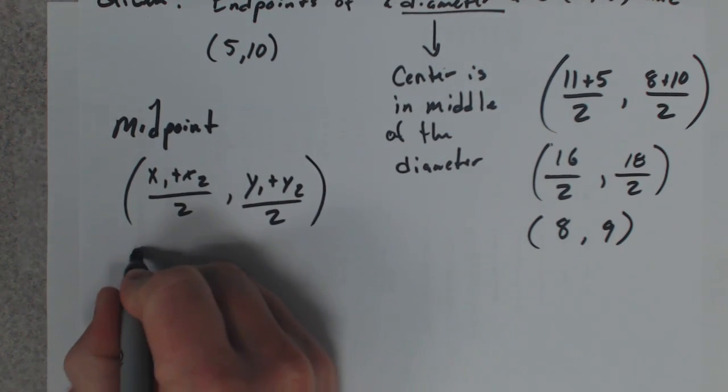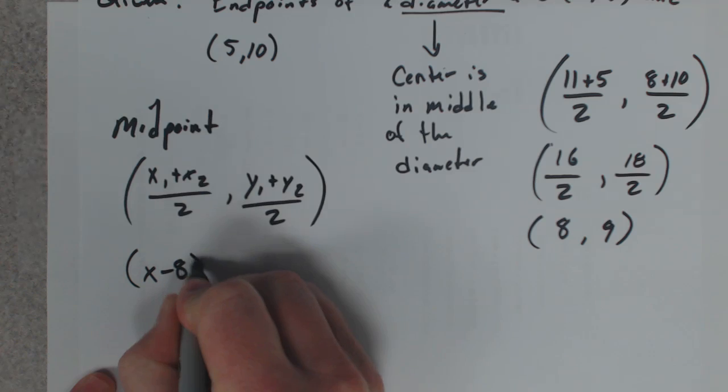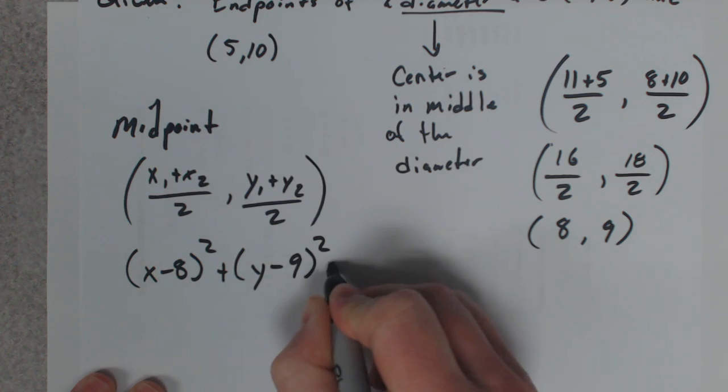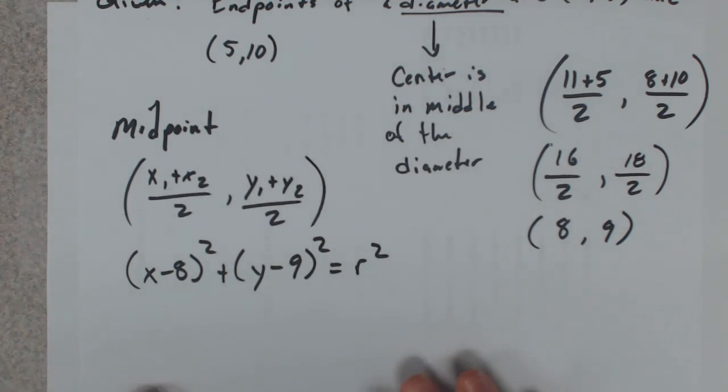So now I know this much: (x - 8)² plus (y - 9)² equals r². It does not tell me the radius.